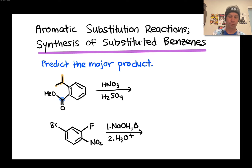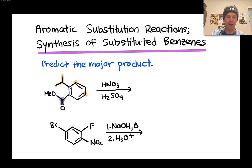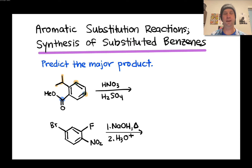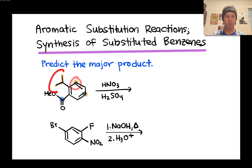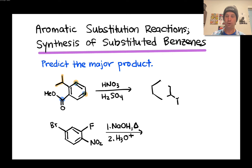The isopropyl group, being an alkyl group, is an ortho/para director, while the ester group, being withdrawing by resonance, is a meta director. There are two reinforced positions where both groups direct substitution, but one is significantly more sterically crowded than the other. The position close to the isopropyl group is disfavored, so the major product comes from substitution at the position para to the isopropyl group.